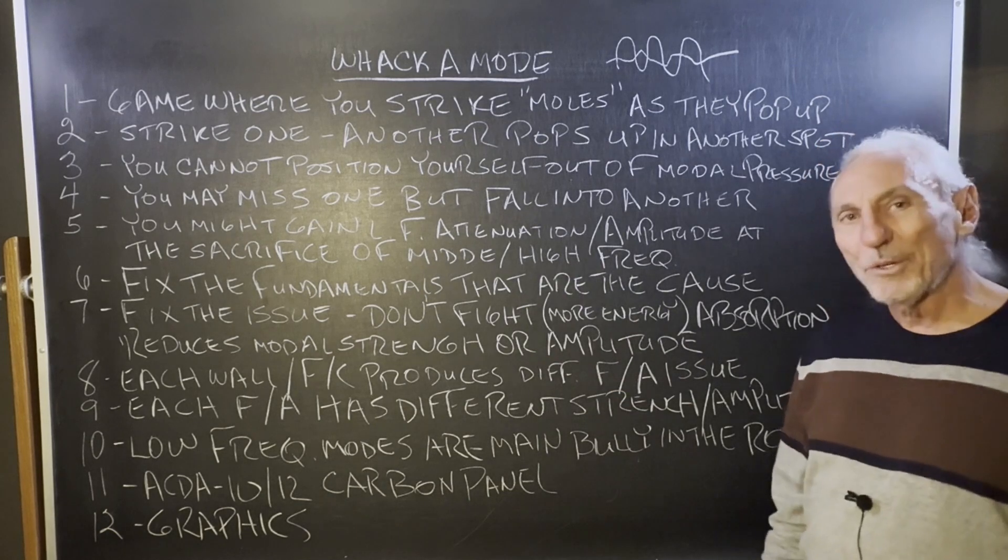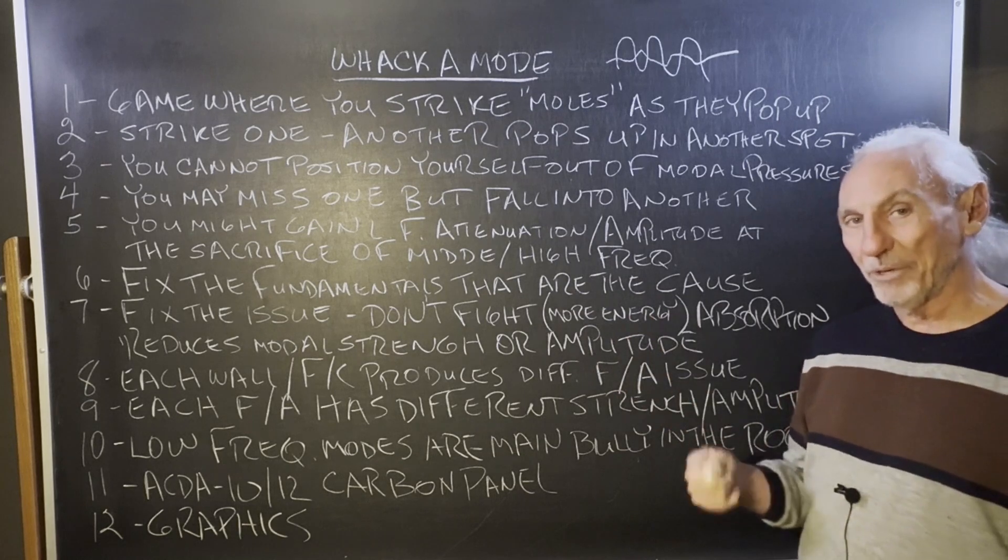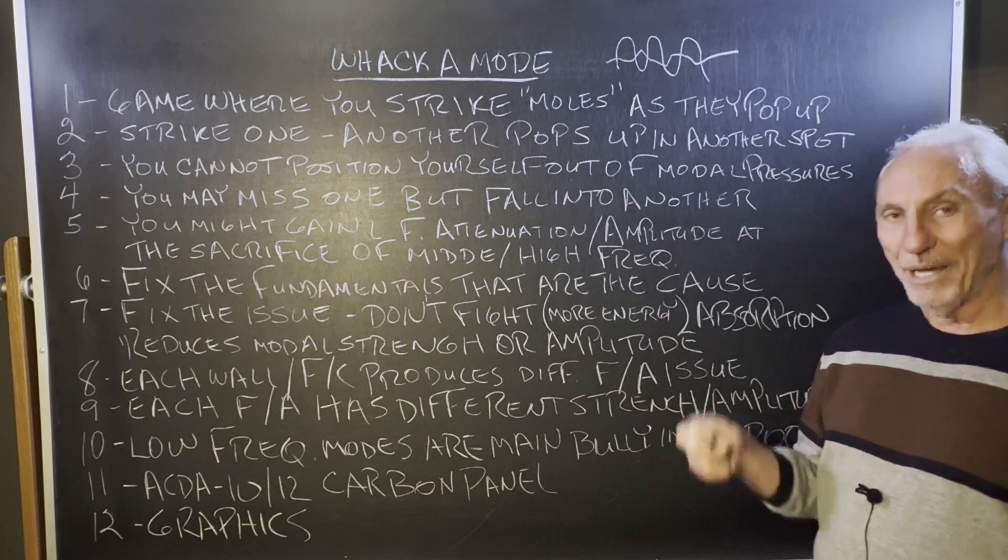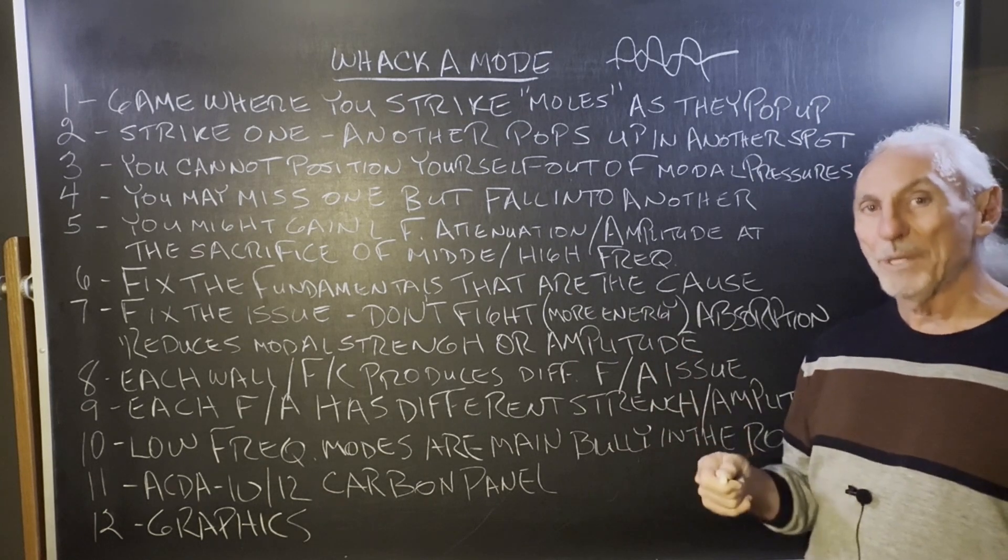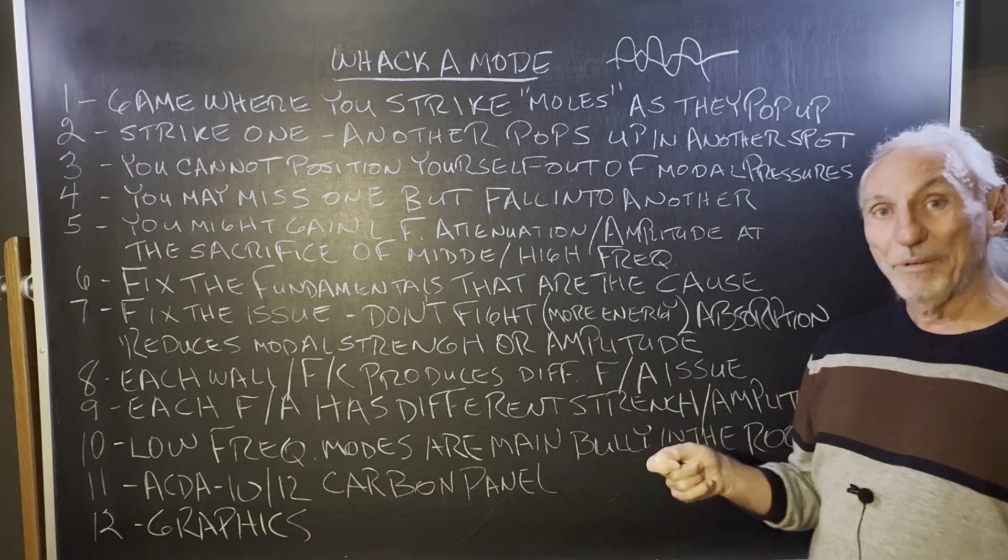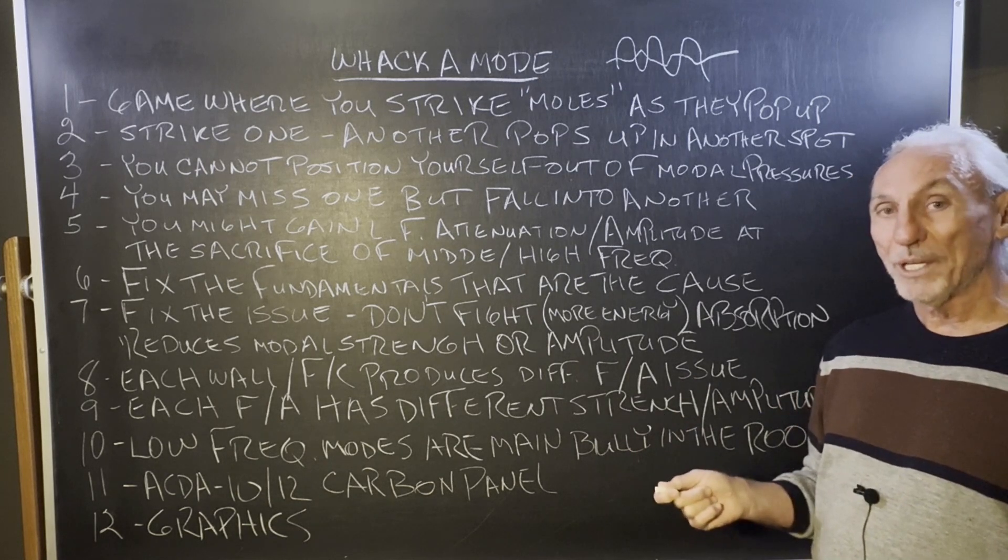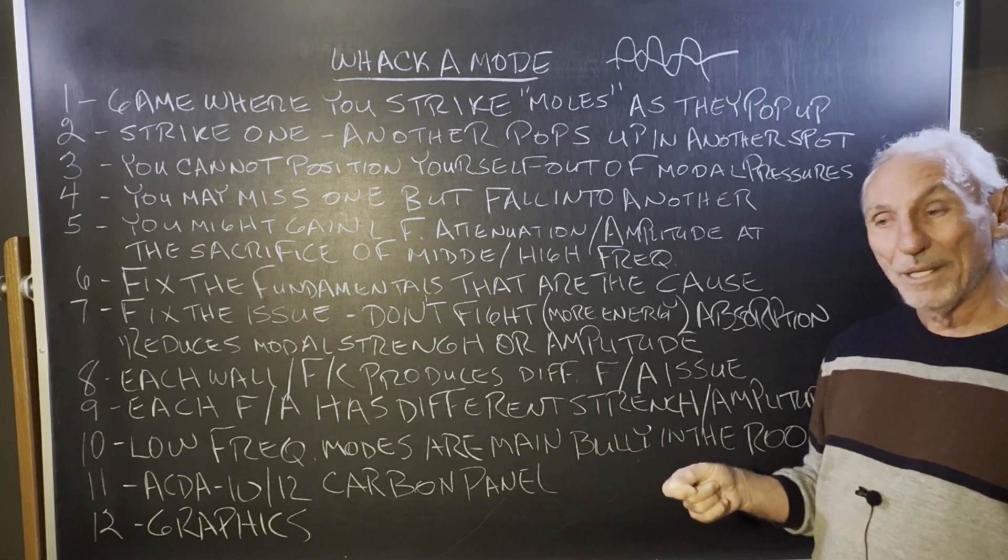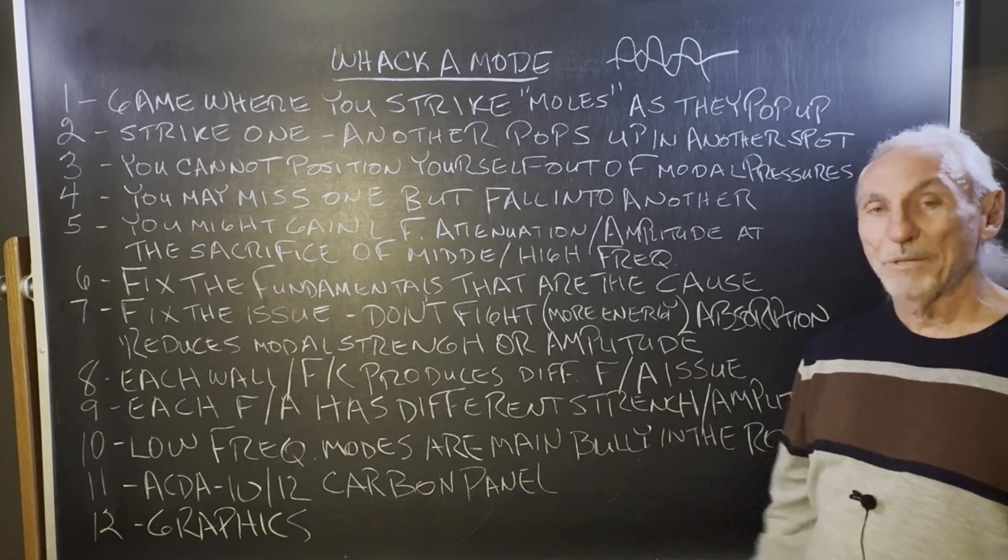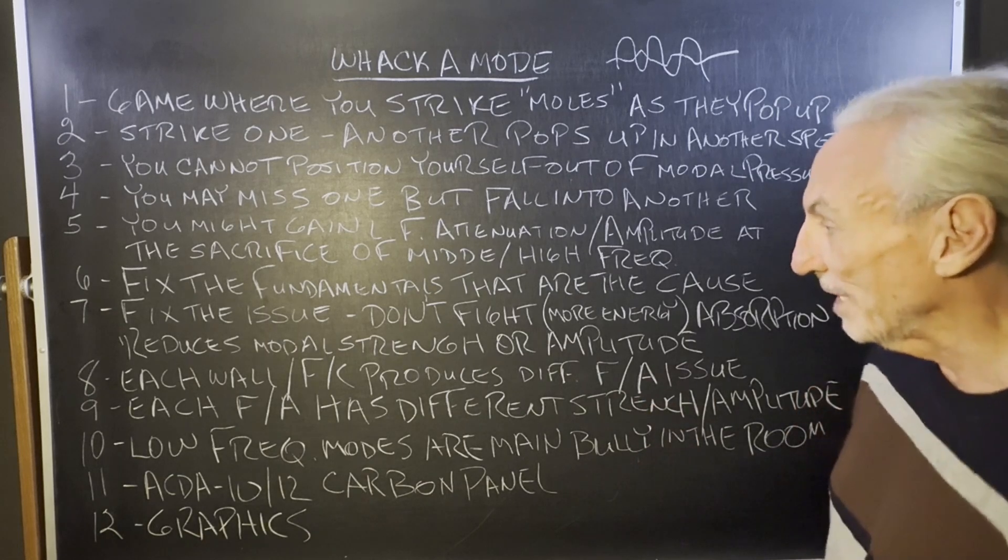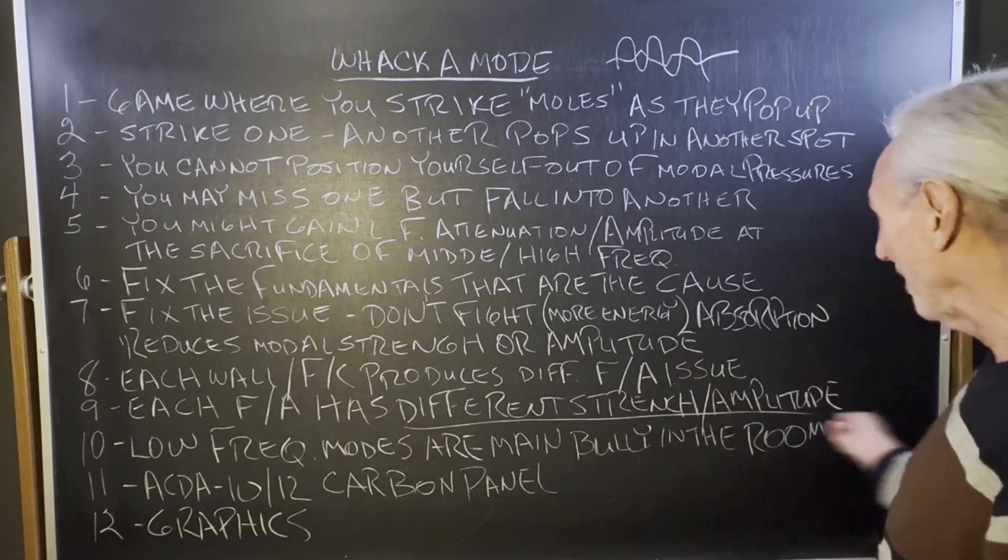Fix the fundamentals that are the cause. Every wall surface has a different frequency and amplitude of problem. Calculate the frequency and the amplitude of the problem. Apply the appropriate treatment to that wall. Some walls will have different treatment types. Some walls may have a starting modal frequency issue at 40, some walls may have one at 30. So you treat with the proper technology that has those starting point resonant frequencies. That's how you have to do it.